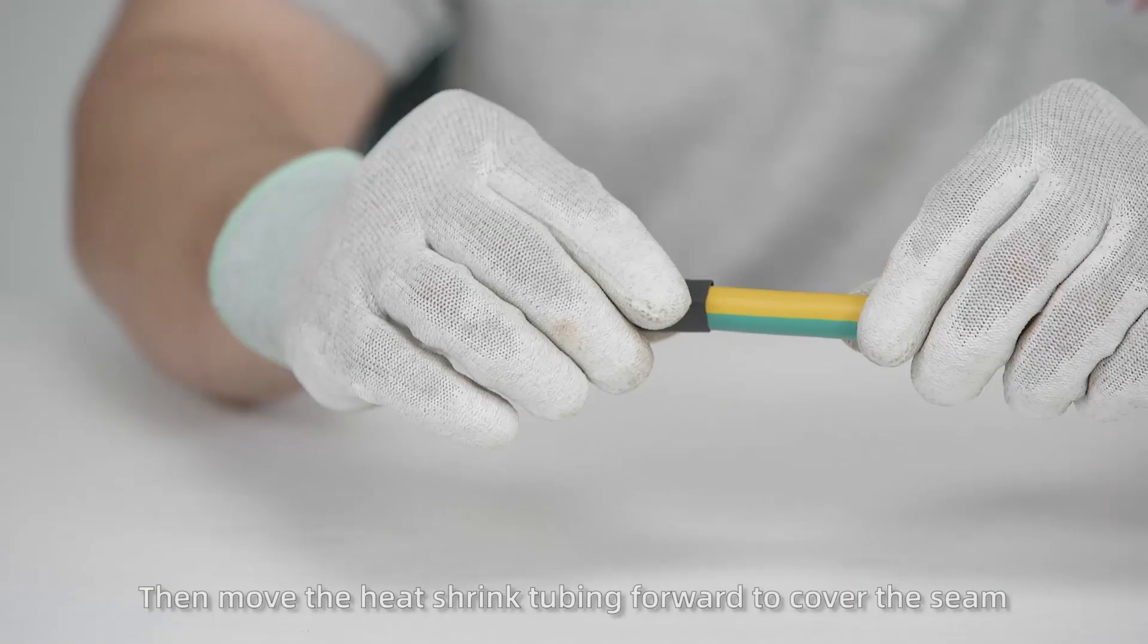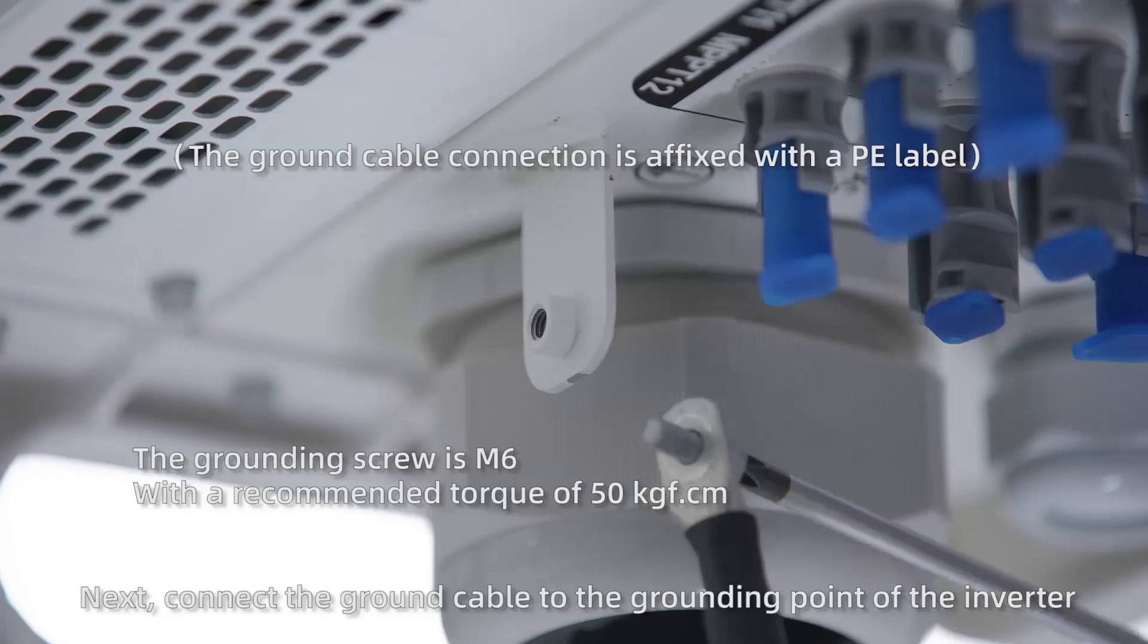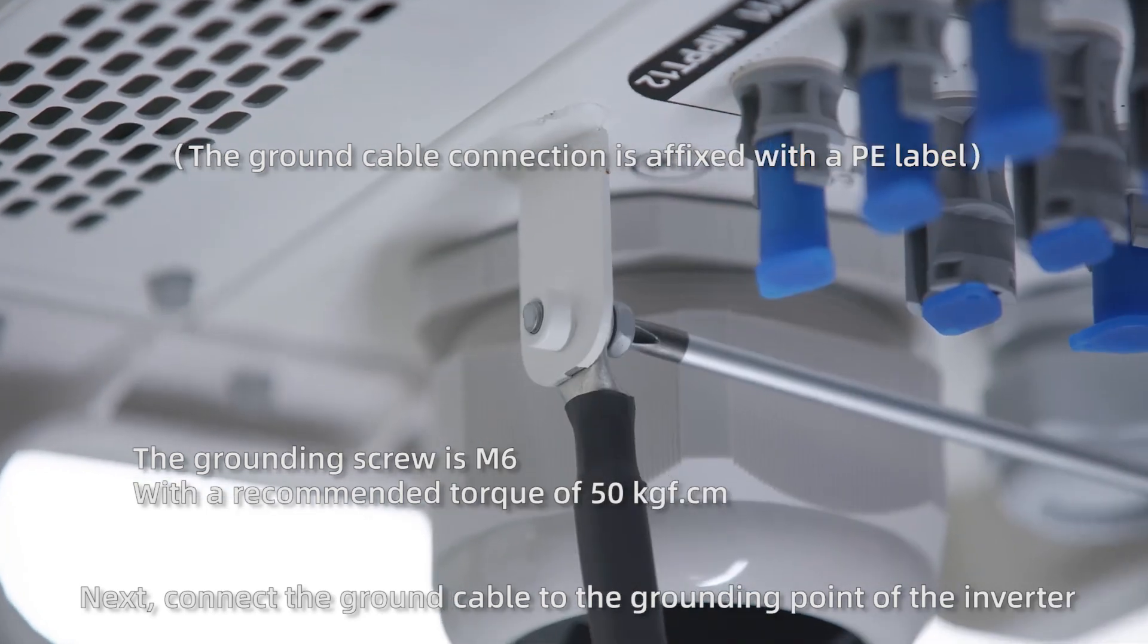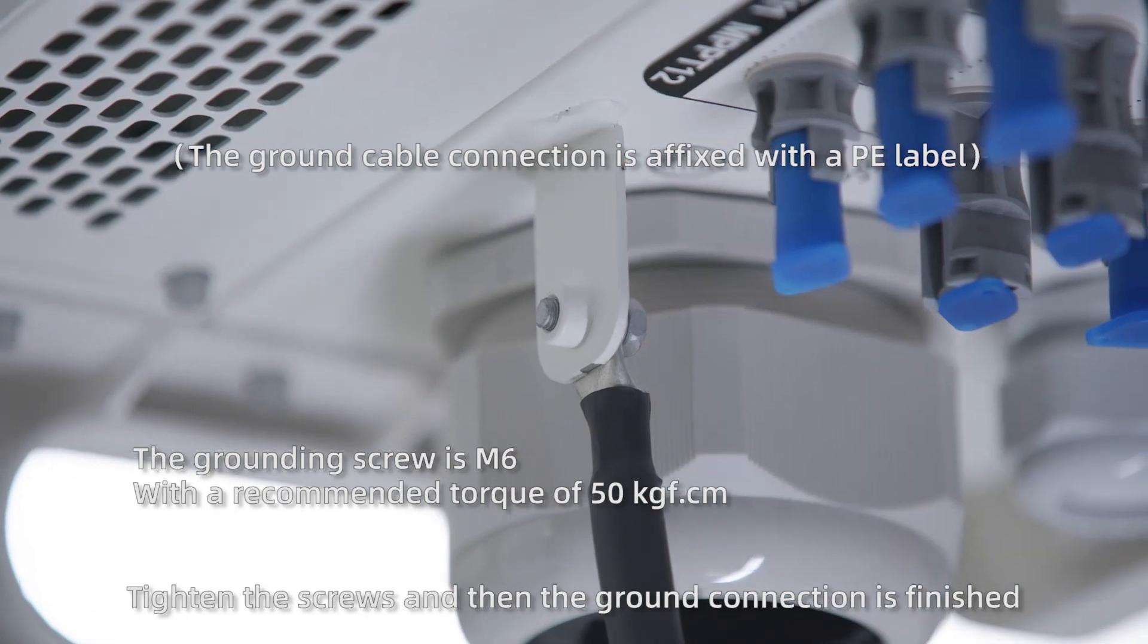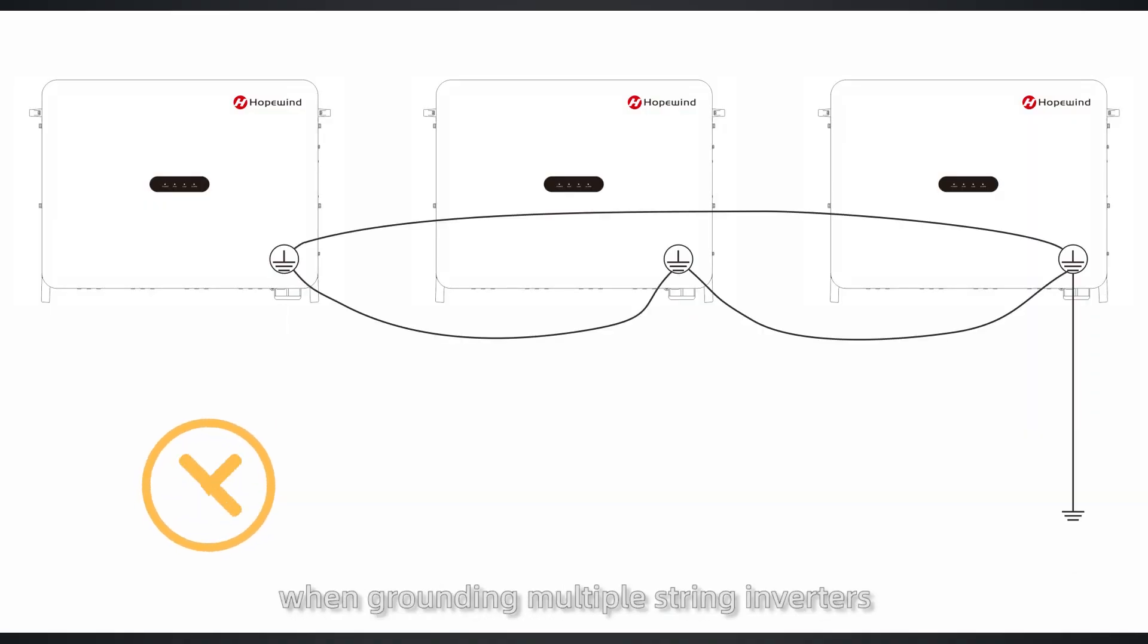Then move the heat shrink tubing forward to cover the seam, and use a dryer to heat the tubing to make it tight. Next, connect the ground cable to the grounding point of the inverter. Tighten the screws, and then the ground connection is finished. Please adopt single point grounding when grounding multiple string inverters.